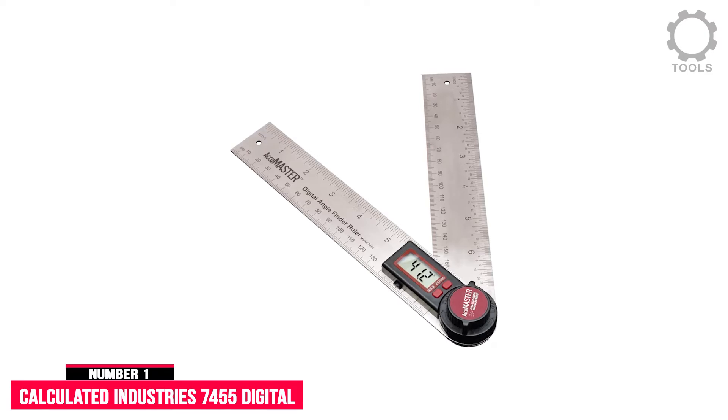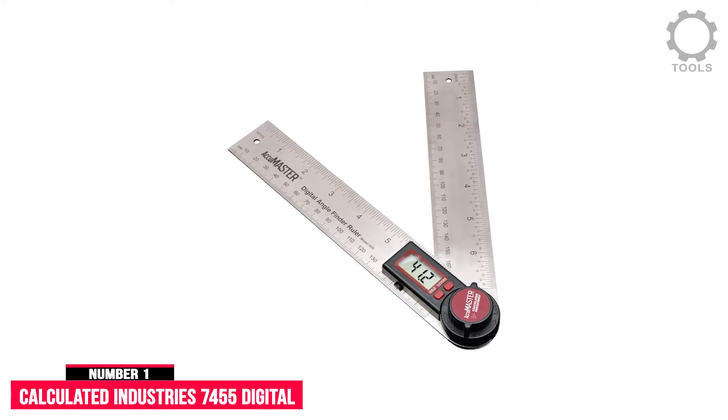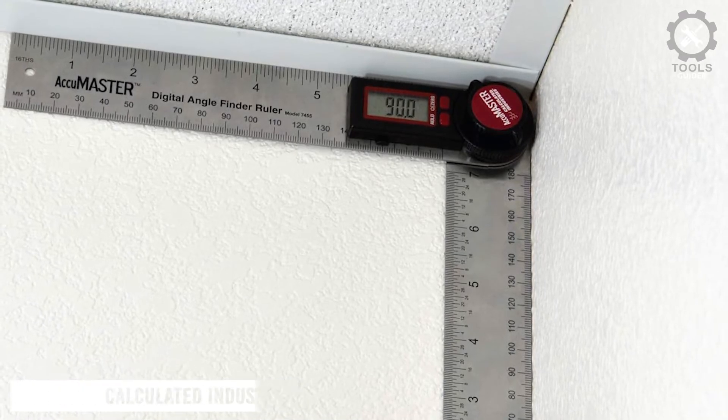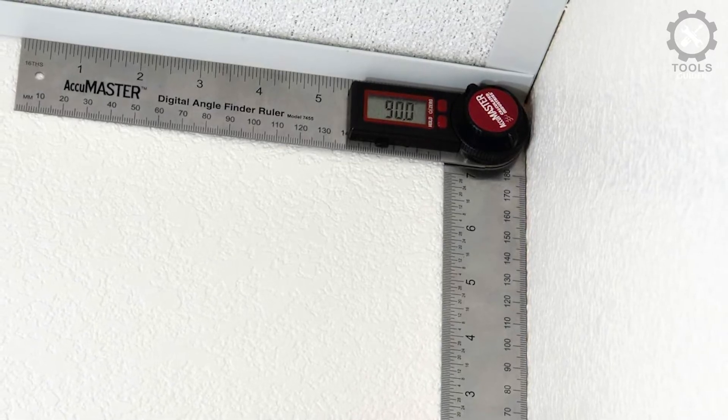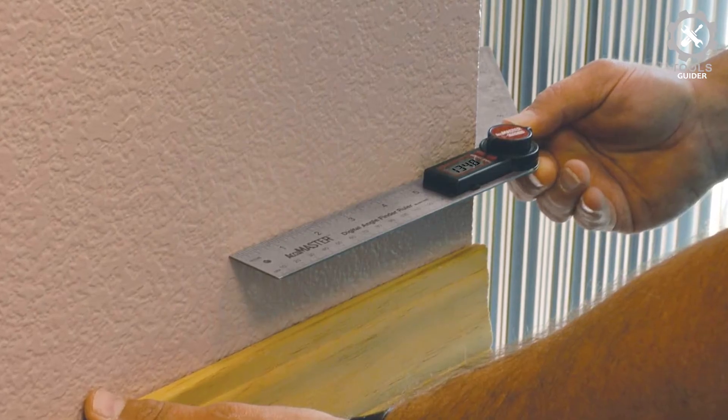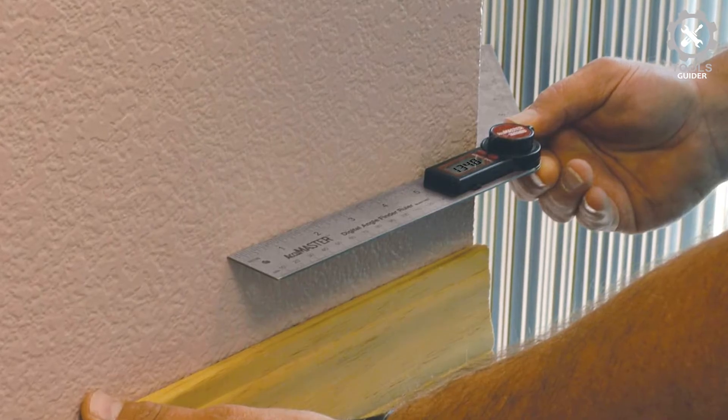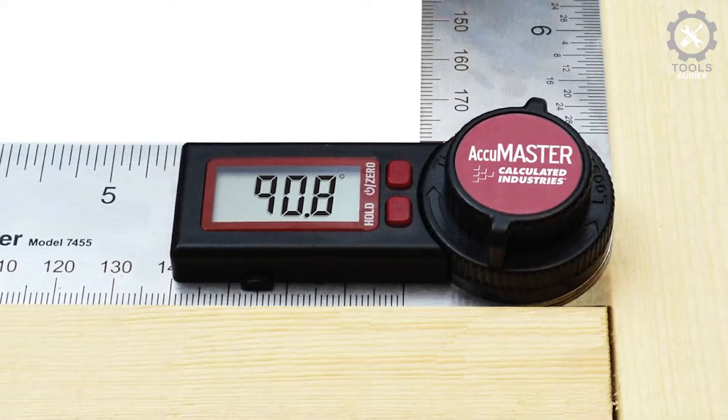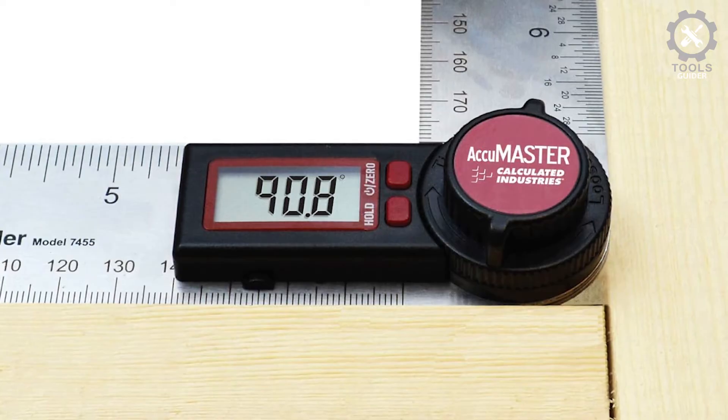The Calculated Industries 7455 Digital Protractor is a versatile angle measuring tool that can work as a protractor and an angle gauge at the same time. It helps to measure all the workshop miters.